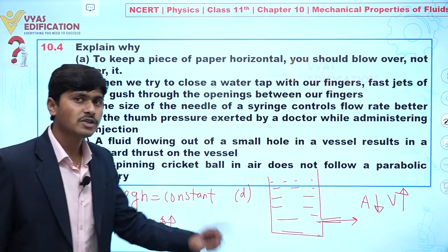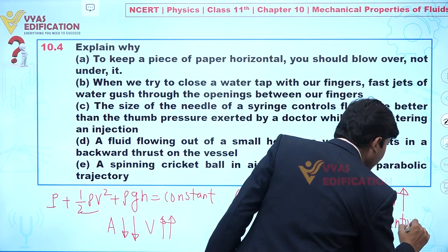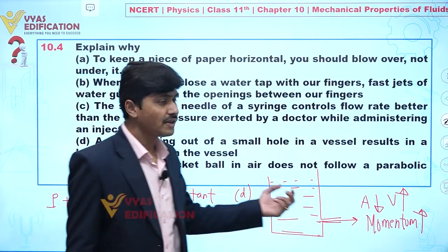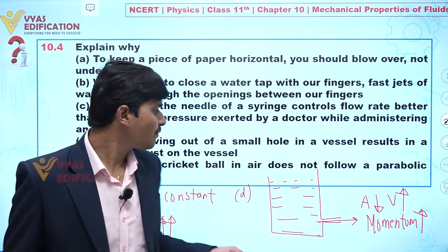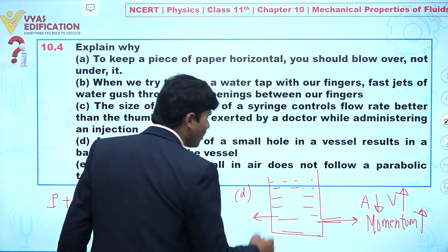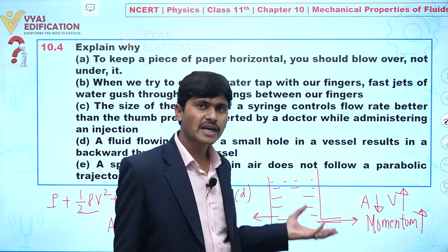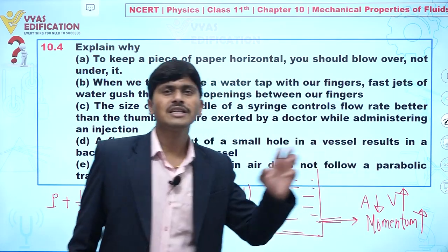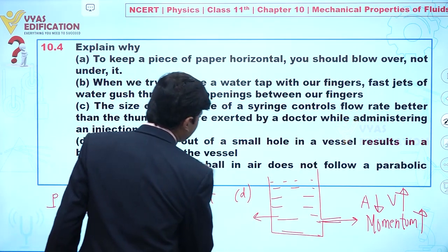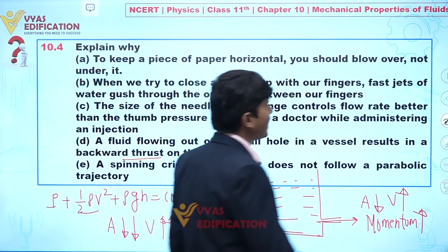When area is less, velocity will be more. When velocity is more, momentum — defined as mass times velocity — will be more. By Newton's third law, every action has an equal and opposite reaction. So as the liquid exits with higher velocity and greater momentum, a backward thrust is exerted on the wall of the container.